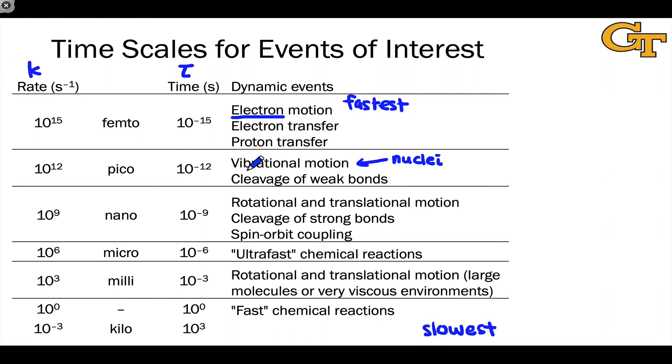Weak bond cleavage is on the scale of picoseconds, so about a thousand times slower than electron and proton motions. We have simple bond cleavages of bonds that were weak to begin with, with very little or zero, in the case of an excited state, activation energy for that process to take place.